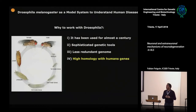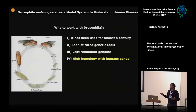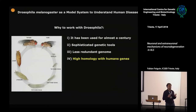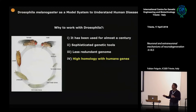To answer these questions, we use Drosophila because it is a well-known system used in laboratories for more than 100 years. This allowed the development of many genetic tools. The genome of these insects is a lot less redundant — almost one gene per function. What got me to work with Drosophila for neurodegenerative disease is the high homology they present with human genes.